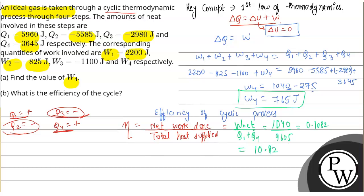So this will be our efficiency, and this will be the value of W4. I hope you understood both questions easily. Thank you and all the best.